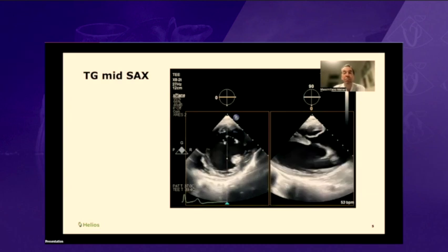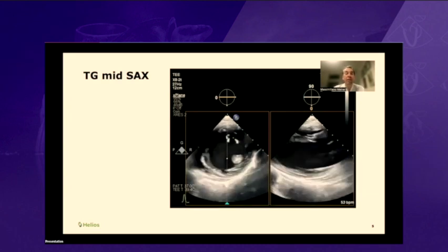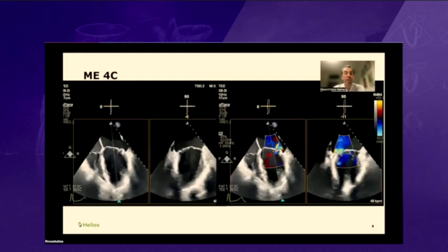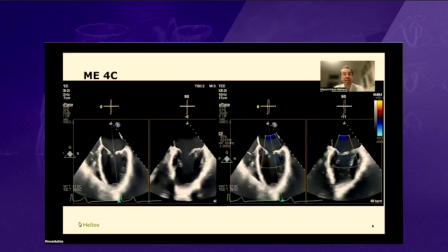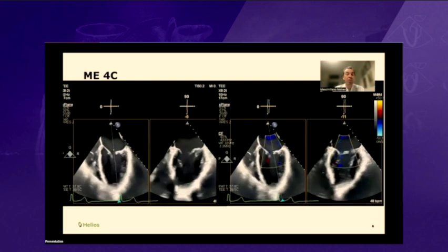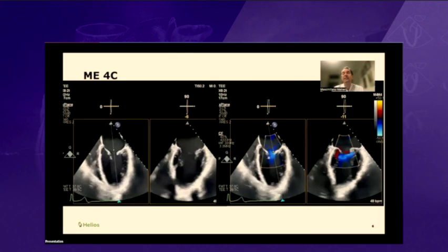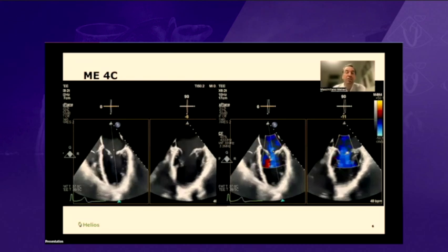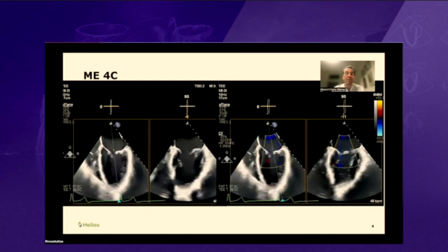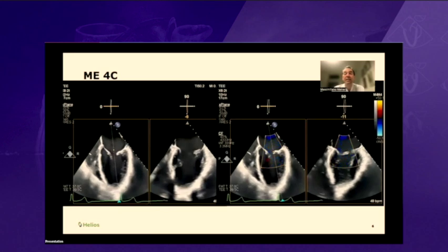This is a short axis view. It's very important to document there is no wall motion abnormality in this patient. We go to a four-chamber view. You can appreciate there is a prolapse in the mitral valve with bileaflet prolapse — both anterior and posterior are prolapsing. There's a normal preserved ejection fraction, although there is high-grade mitral regurgitation, and you can already see a regurgitant jet.